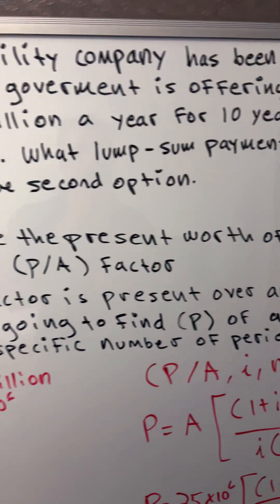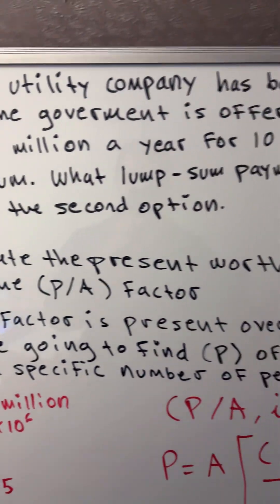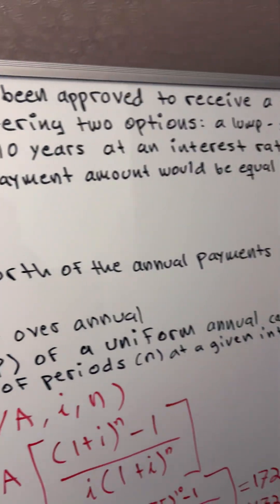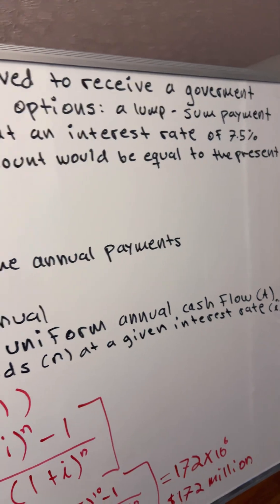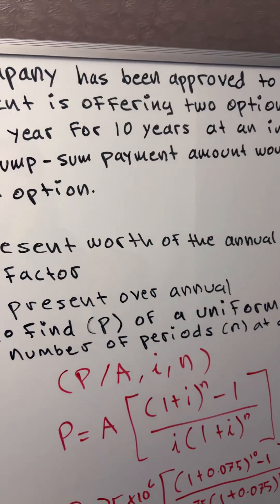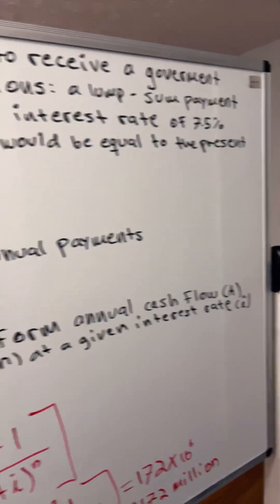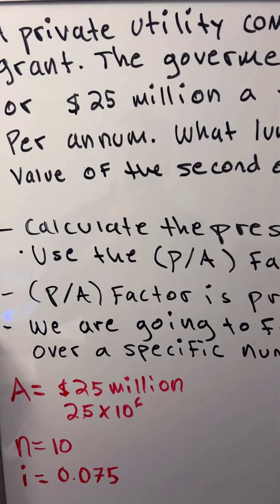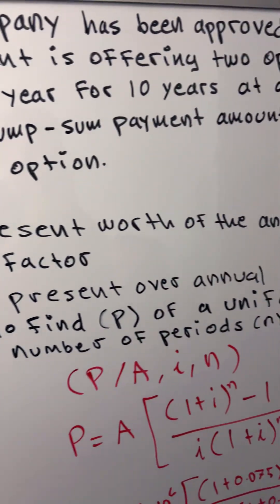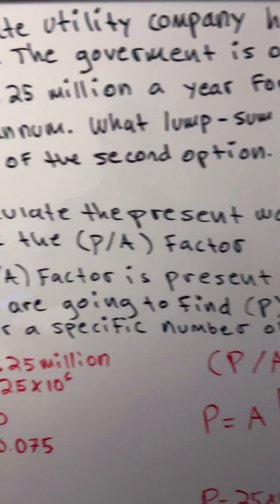The problem states a private utility company has been approved to receive a government grant. The government is offering two options, a lump sum payment or $25 million a year for 10 years at an interest rate of 7.5% annually. What lump sum payment amount will be equal to the present value of the second option?